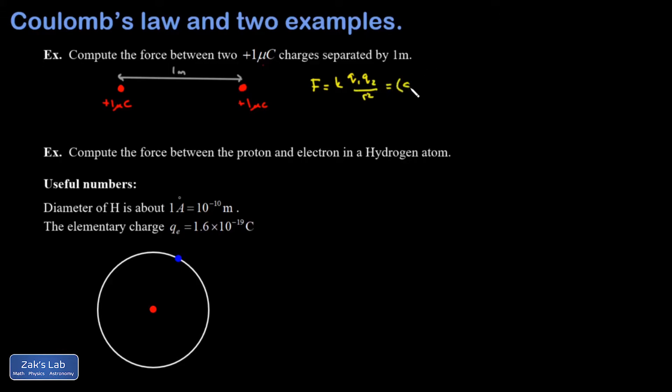And we plug in k. I'm not going to write the units since we already discussed them at length. Both of my charges are the same, so I can just write it like this. Remember, a micro-coulomb is ten to the negative six coulombs. So I can just write it as ten to the negative six squared since there's two of them. And then my distance is one meter squared. When I crunch the numbers on this, I get 0.00899 newtons of force.